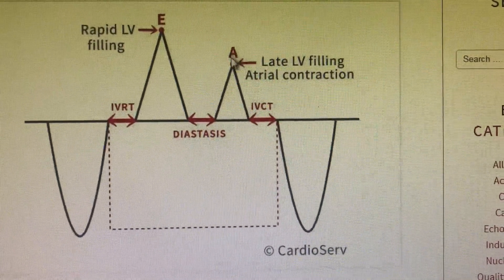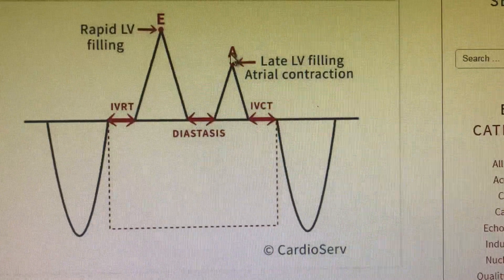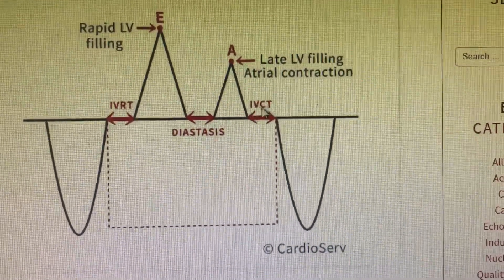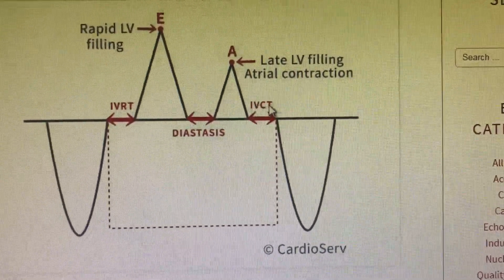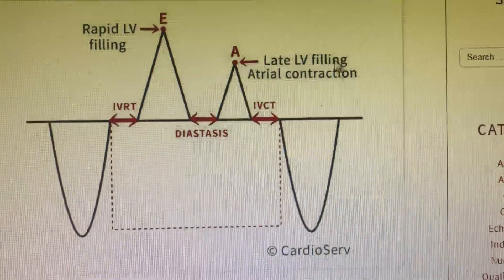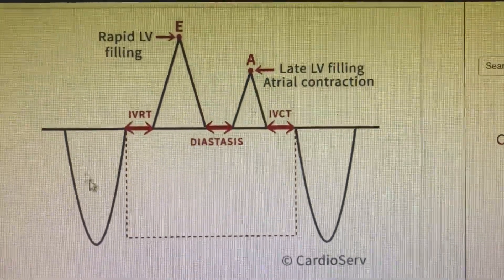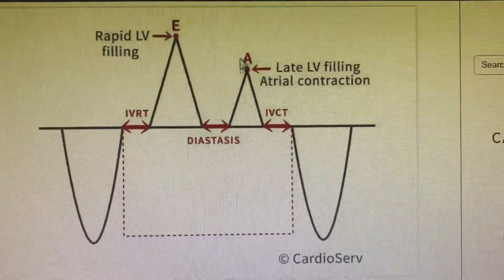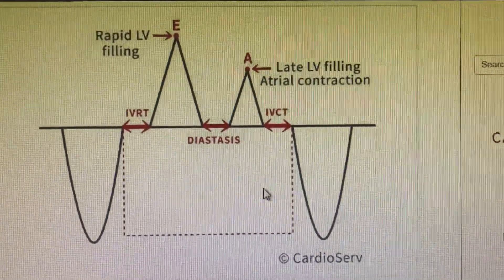Then comes the late LV filling pressure — the atrial contraction, which is represented as the A wave. Then comes the isovolumetric contraction time (IVCT), and then again the systole. This is how you will see the trace when you put a pulse doppler.